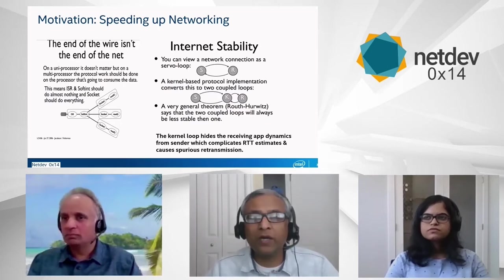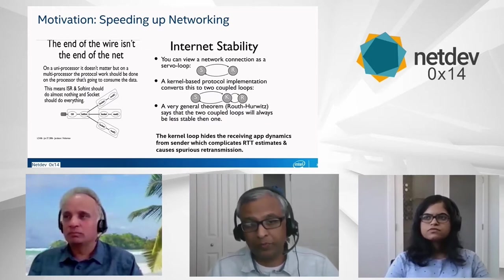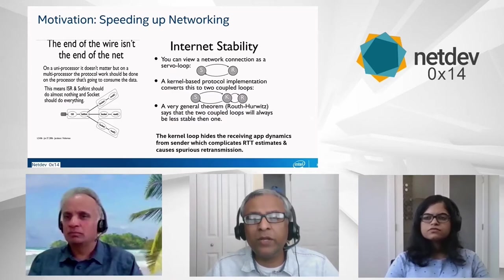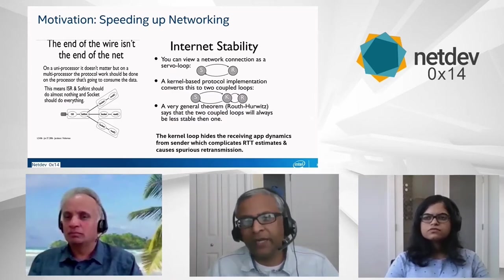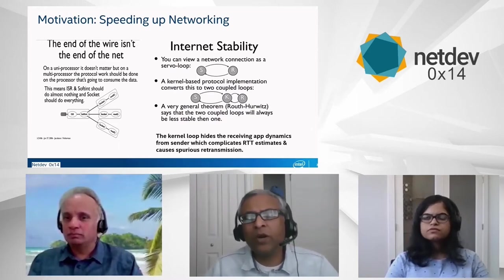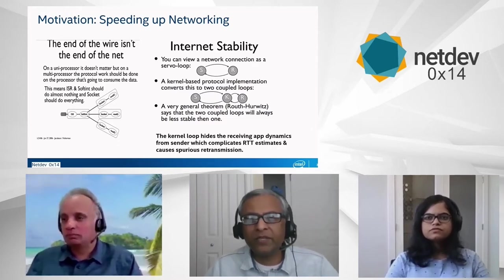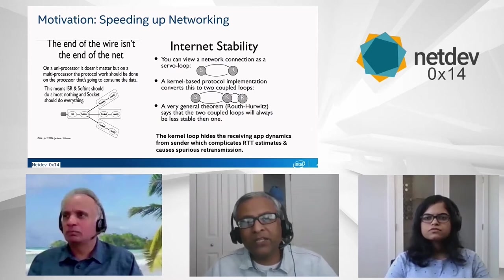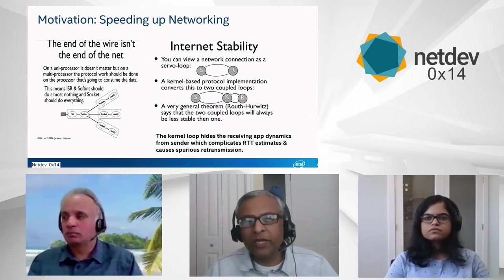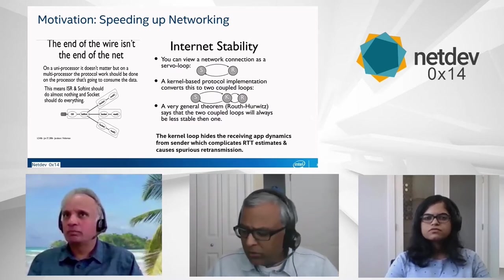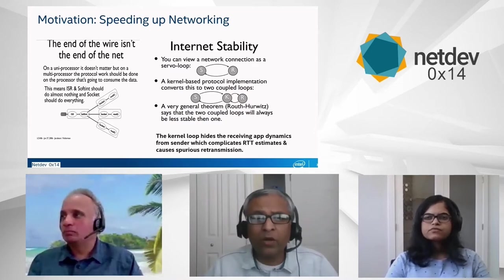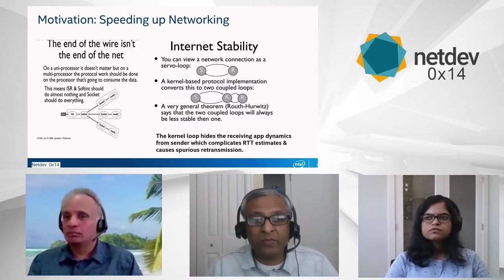But as the system evolved, where we moved to the kernel-based protocol implementation, it suddenly became from one loop to two loops. As we know, the general theorem per Ruth and Horwitz says that when you have two coupled loops, they will always be less stable than one. When you apply this to networking, what it means is that when you have the kernel-based protocol implementation, it essentially hides the receiving app dynamics from the sender, which essentially complicates RTT estimation and causes spurious retransmission. So basically, to do everything from the application, we still need to come up with a model where it acts like one big giant loop — no intermediate entity hides the details from each other. That's really the point: internet stability is important. How do we really solve that even in the modern system, when you have systems with hundreds of CPUs and faster and faster high-speed devices with lots of queues?